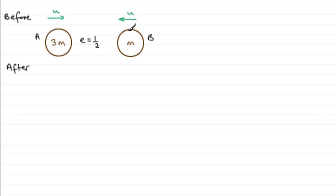We've got the motion before. Now we need to consider the motion after, because it says that in the collision the coefficient of restitution between A and B is a half.